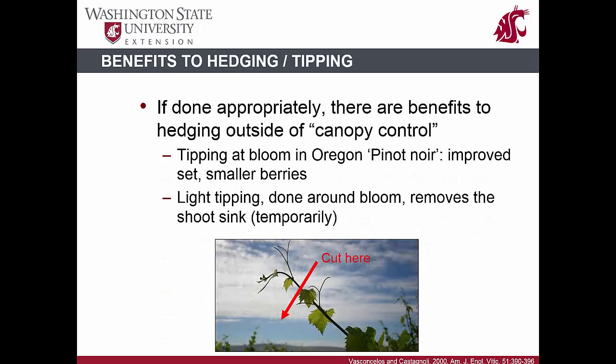When done properly, there are benefits to hedging. For example, if only the very actively growing shoot tips are removed at bloom, the source-sink relationship can be switched to favor cluster development. In Oregon, early hedging was shown to improve fruit set, while simultaneously allowing for smaller berries.